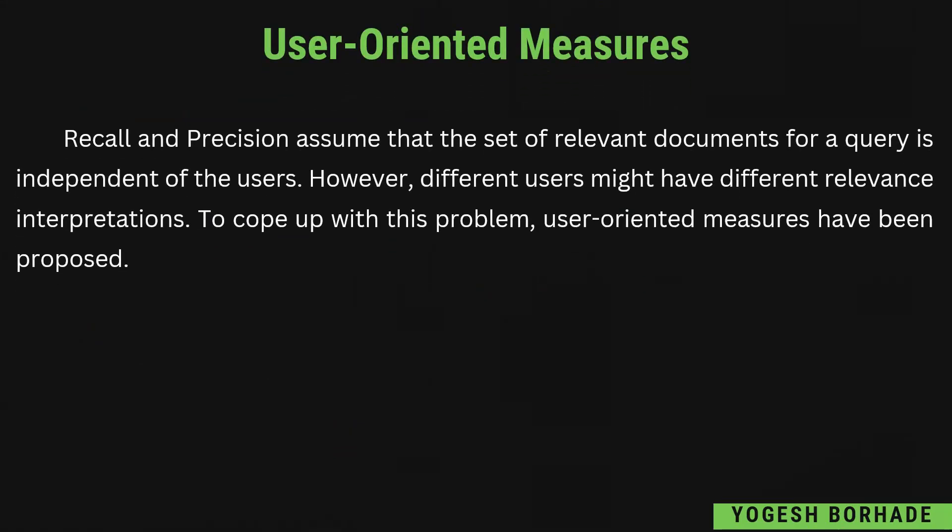So, user-oriented measures — why do we actually need them? Because recall and precision assume that the set of relevant documents for a query is independent of the users, which means the user is not considered. However, different users might have different relevance interpretations, as we have seen in lecture 3. To cope with this problem, user-oriented measures have been proposed, where we consider the users or think from the user's perspective.